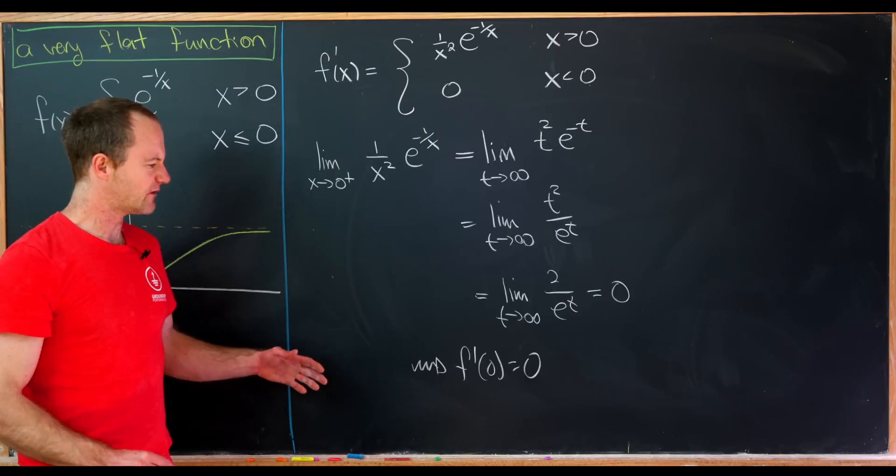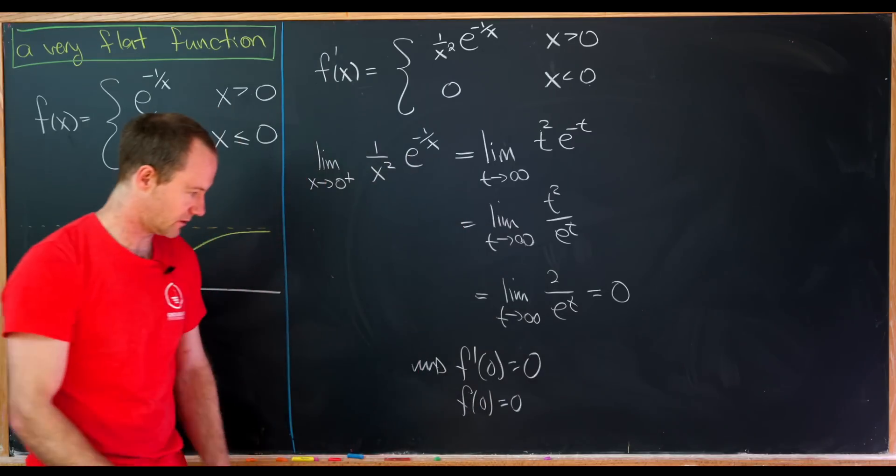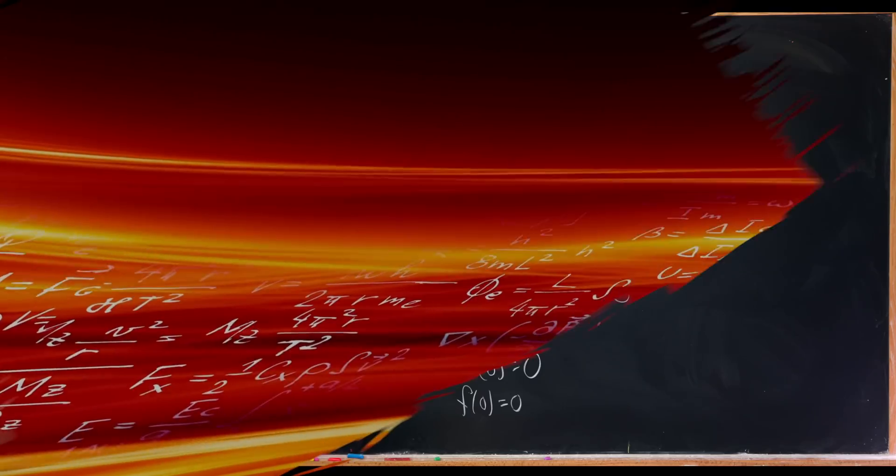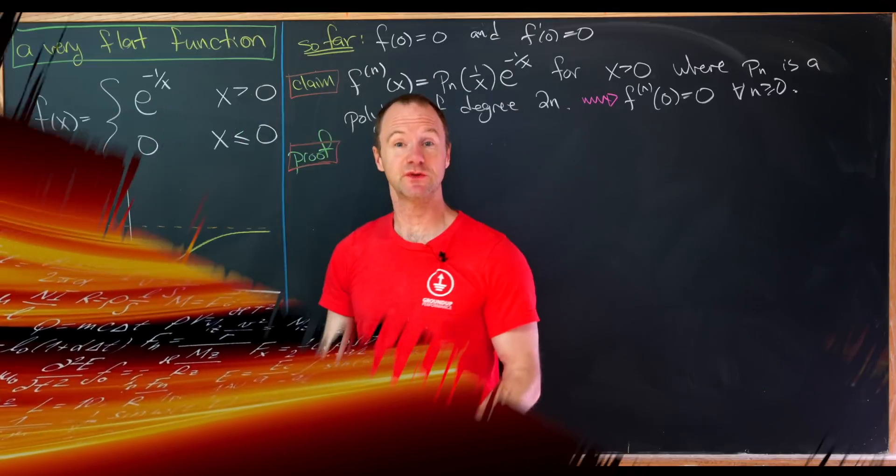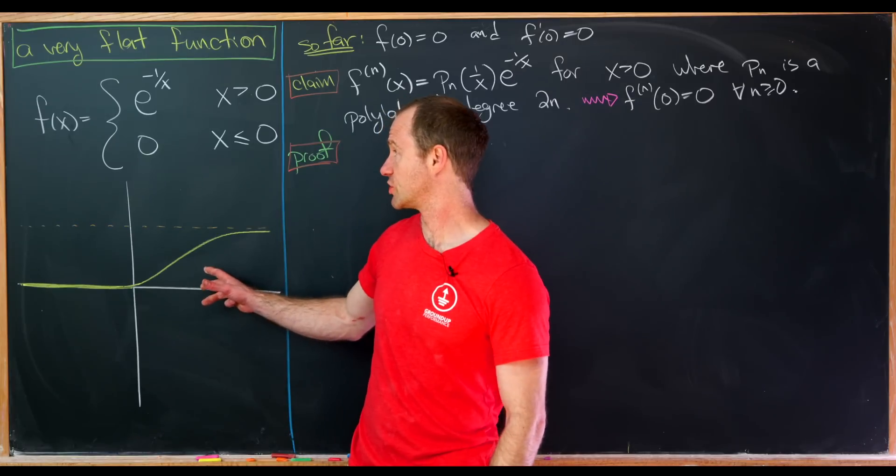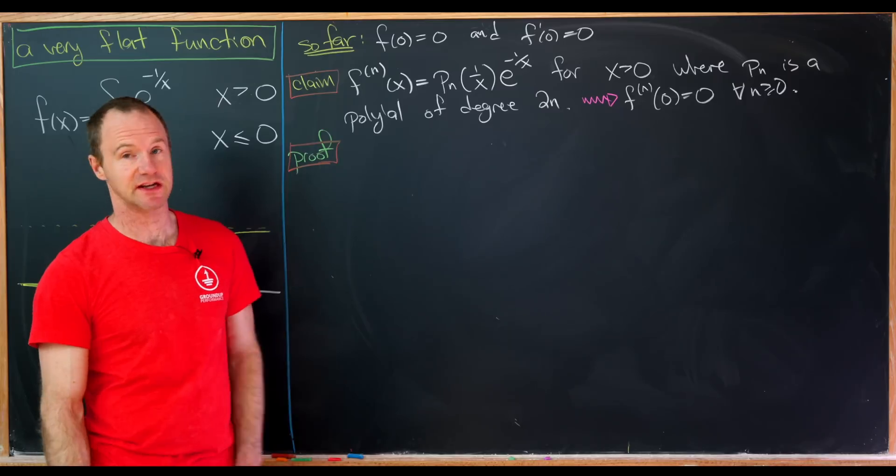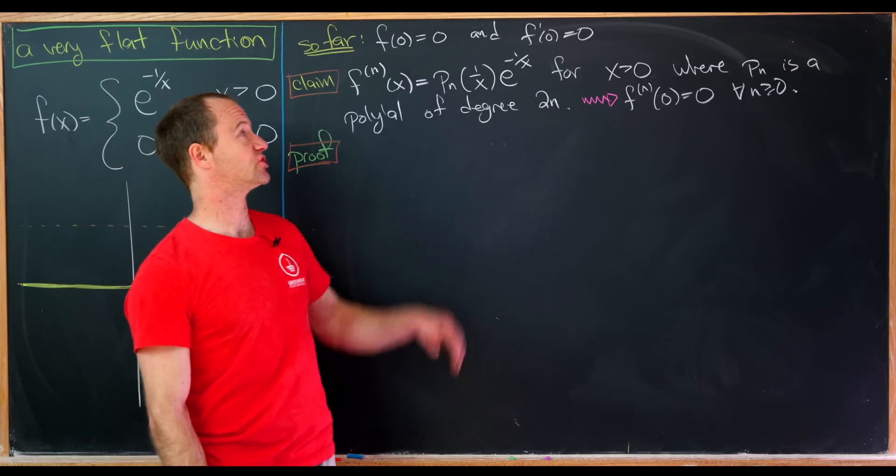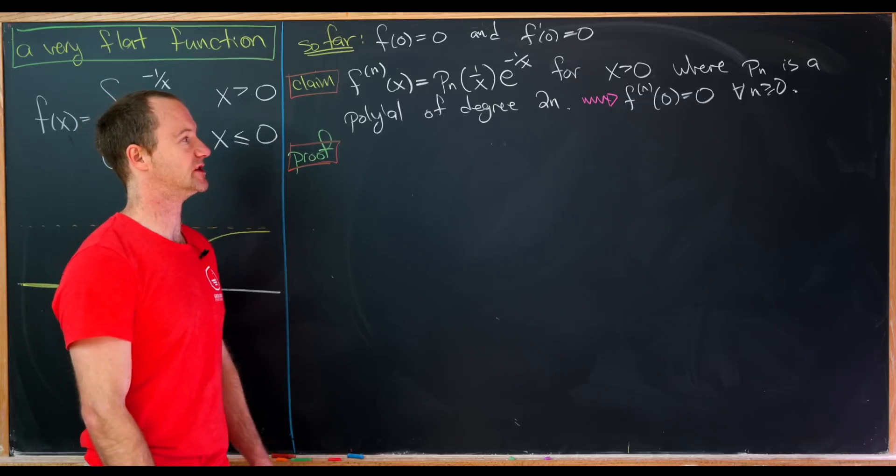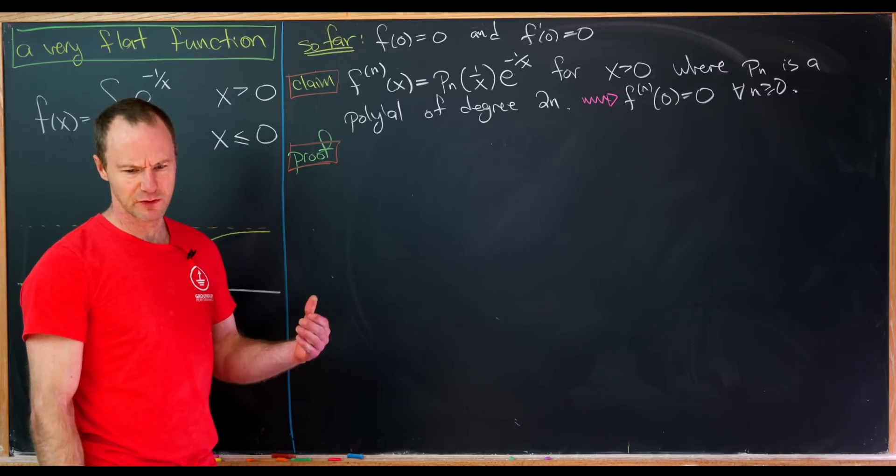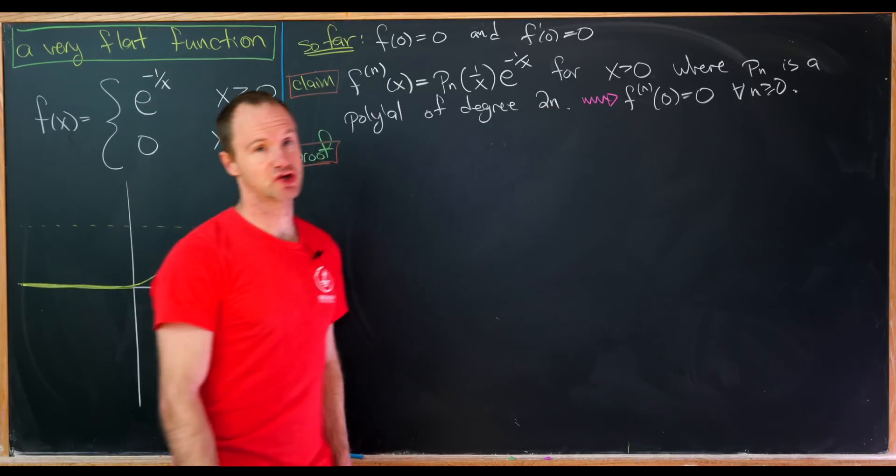So now that we've got that together with what we saw previously, which was f of 0 equals 0 and the continuity, let's maybe explore the higher derivatives. So we just got done arguing for our function over here defined as follows that it was equal to 0 at 0, also continuous, and its derivative was equal to 0 at 0. And furthermore, the derivative function was also continuous.